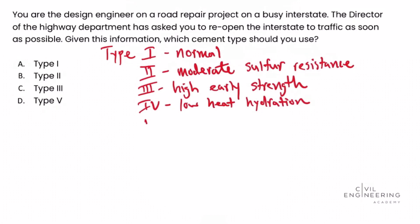Finally, Type V cement has high sulfur resistance — higher than both the normal Type I cement and the Type II moderate sulfur resistance. Typically you'll see Type V cement used in areas with high sulfur content or in coastal areas.